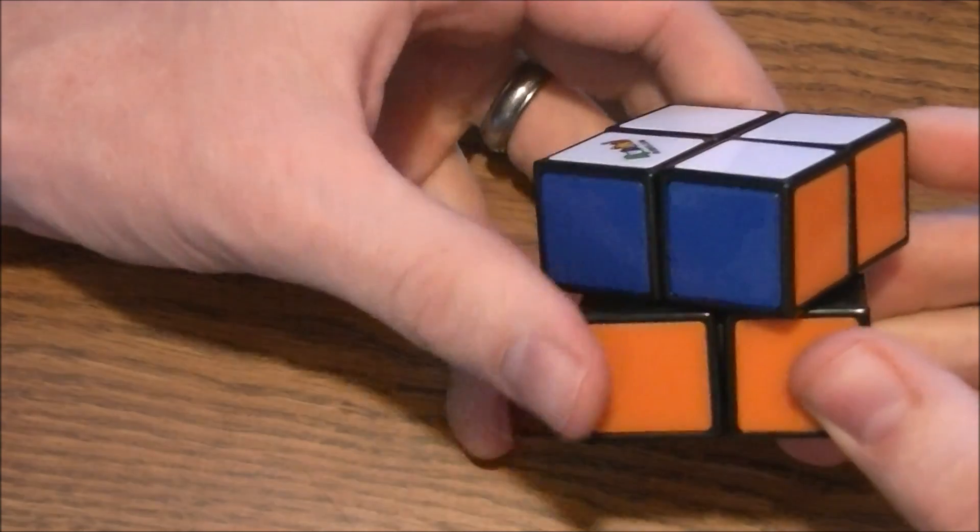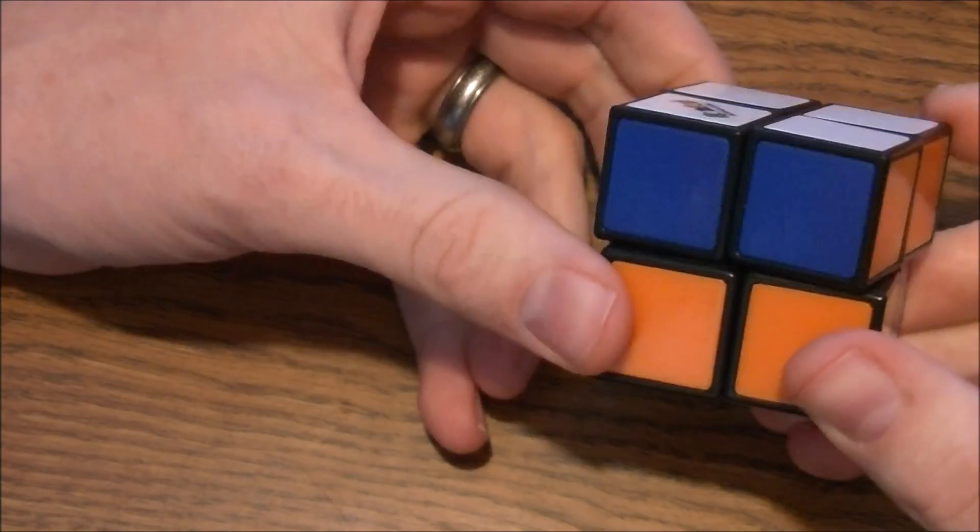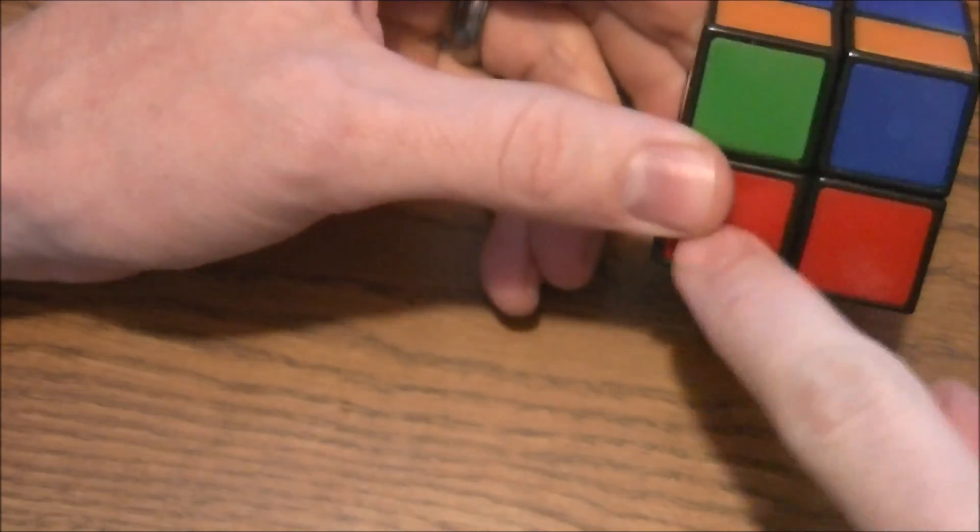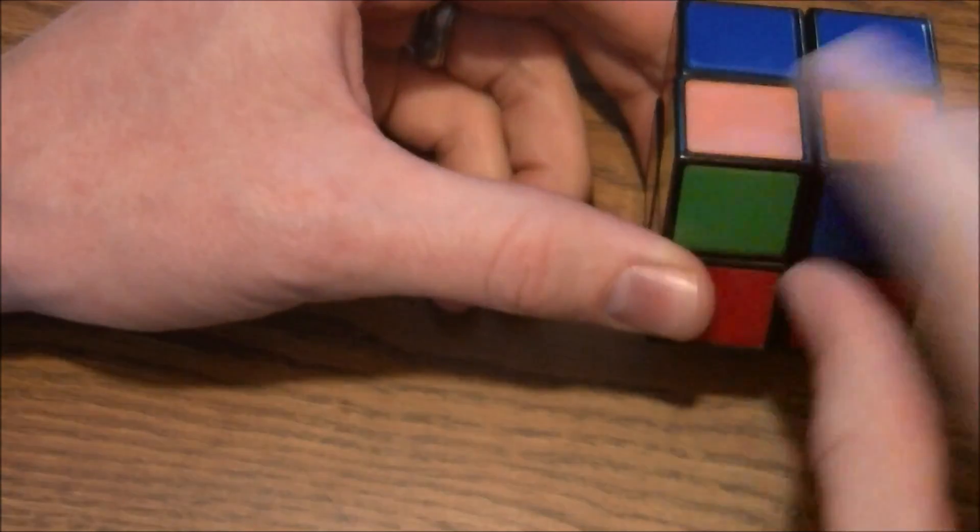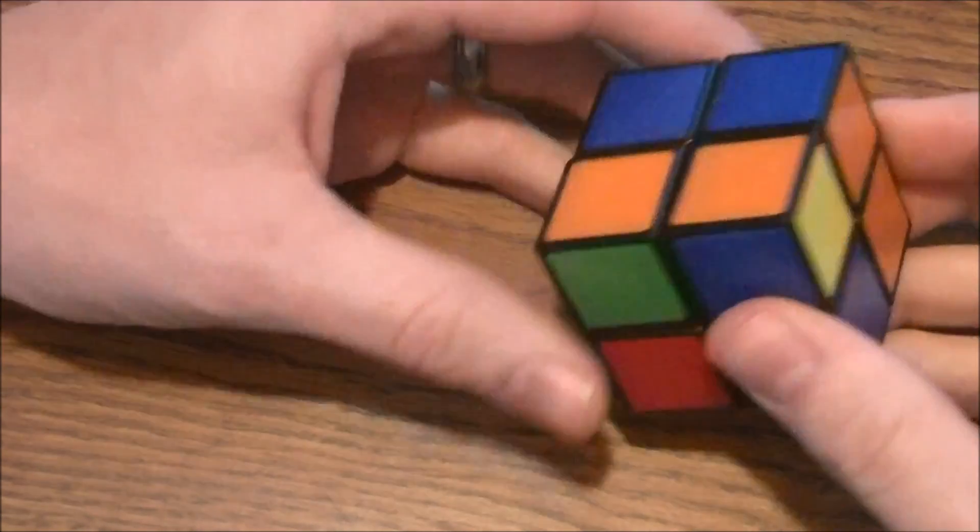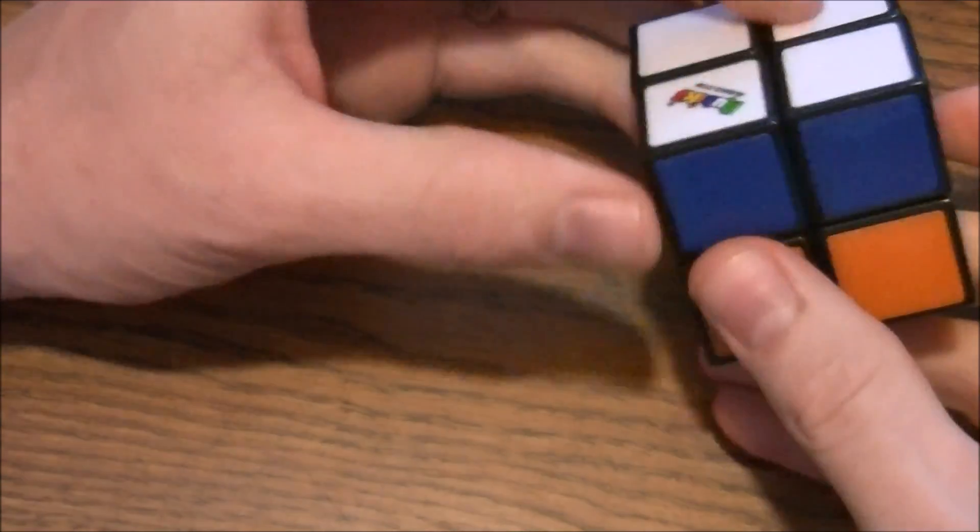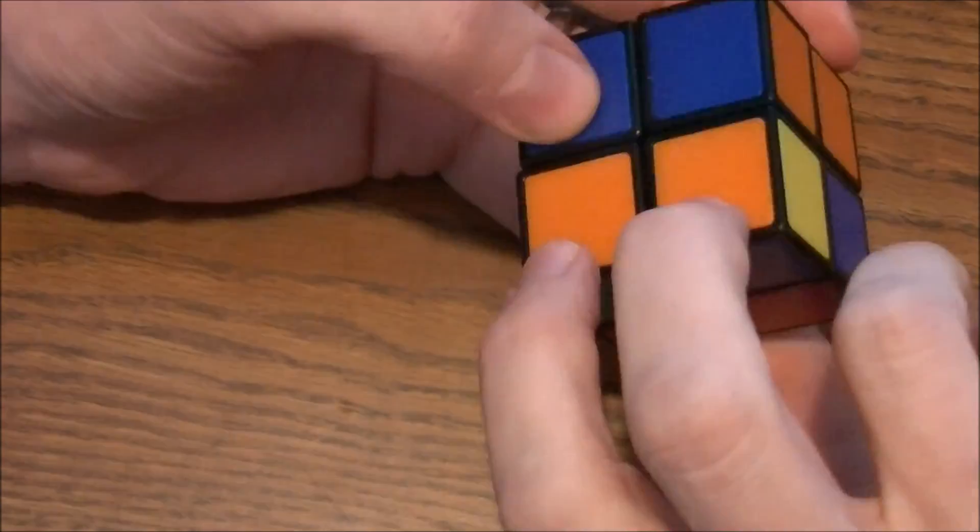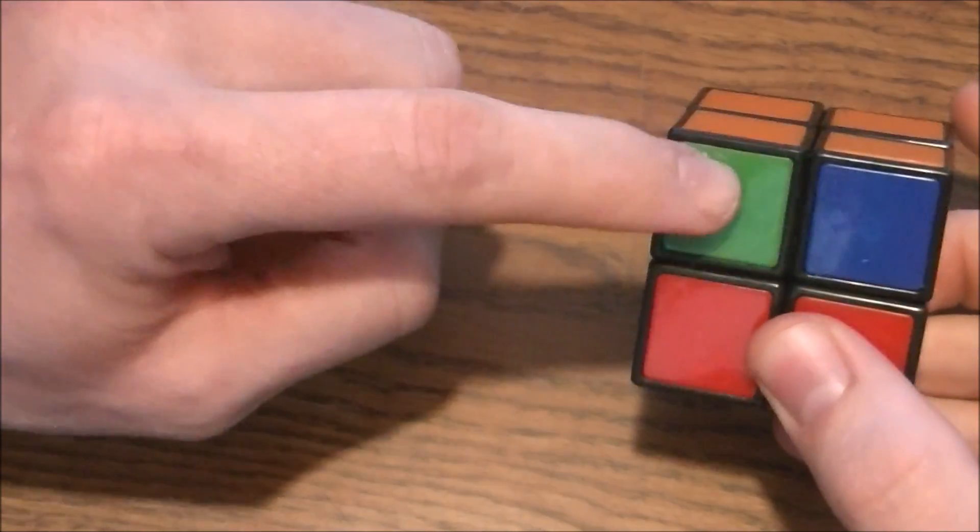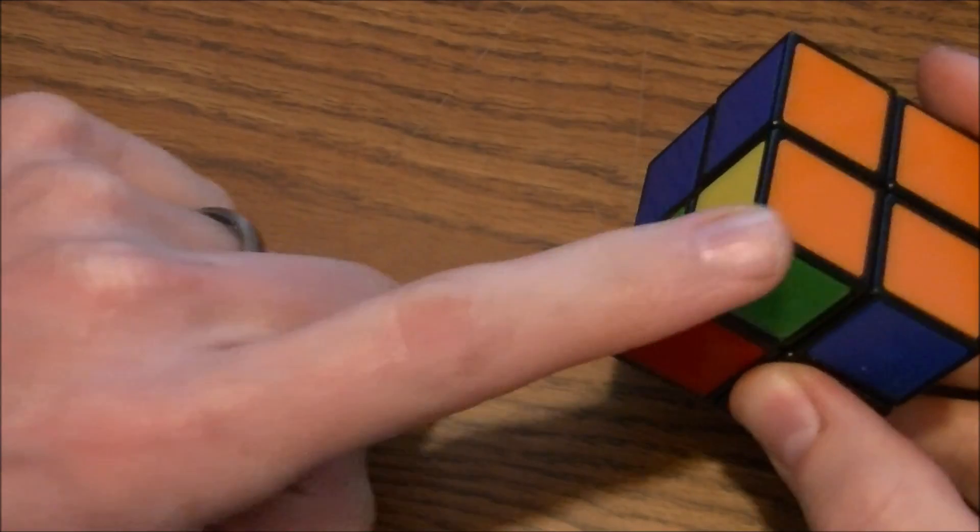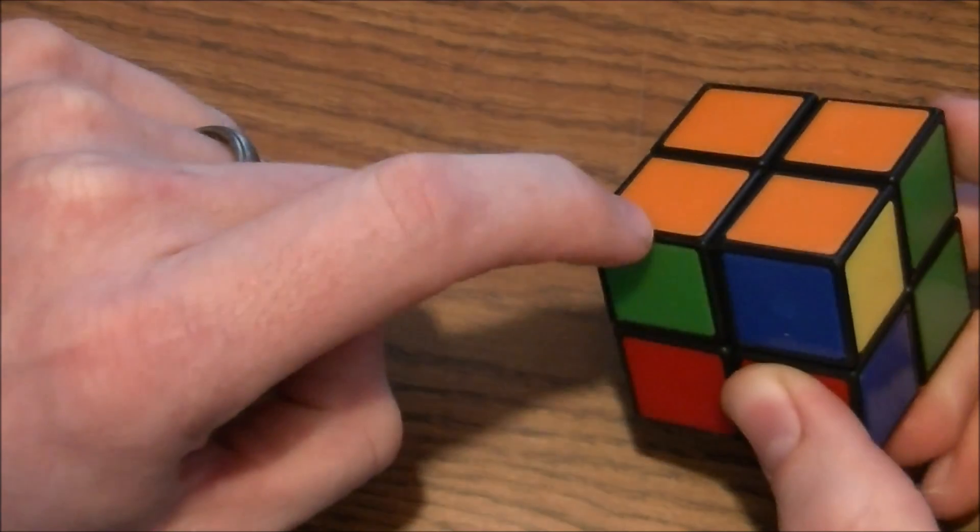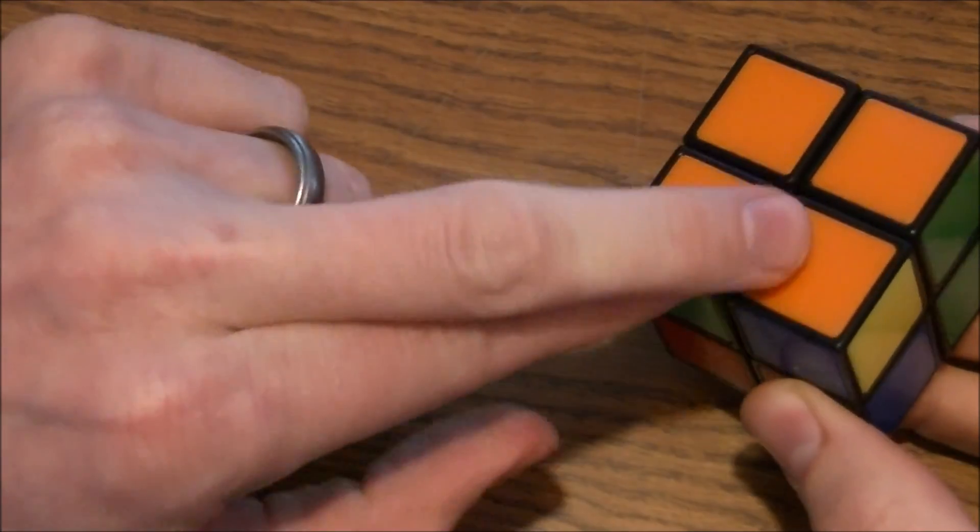Now there are two different moves that I'm going to show you to get the bottom solved. One puts all the bottom pieces in the correct space, and the other one rotates the bottom pieces. So first off, I want to line up the bottom pieces. I've got two oranges here, so I'm going to line that up on the orange side. Just so that I can see, is this piece where it's supposed to be? This is an orange and green, and that's orange and blue. So that's in the wrong place. These two need to switch.